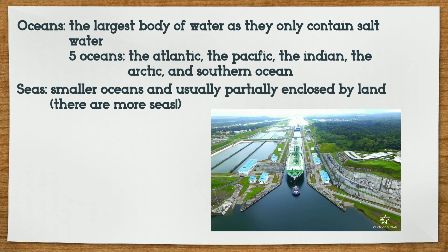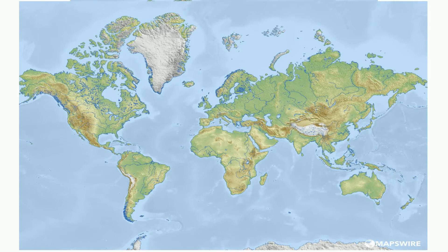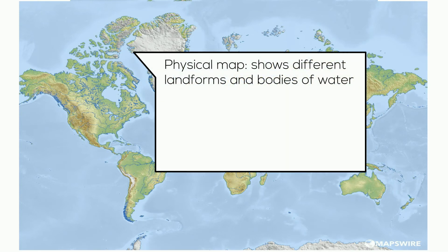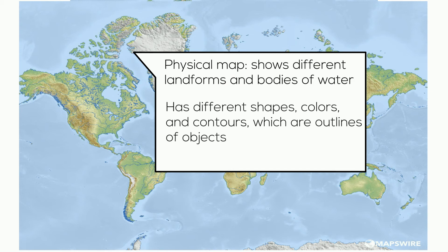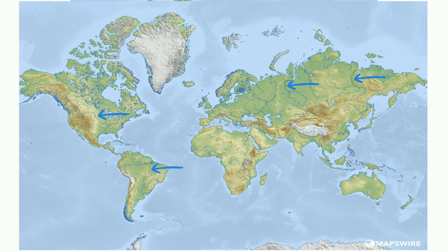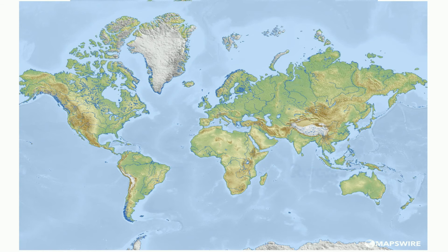Now that we learned about types of lands and waters, let's try to point out some of them on a map. This is called a physical map, which shows different landforms and bodies of water. The map has different shapes, colors, and contours, which are outlines of objects for separating land and water. You can see it's very textured, and it shows pointy little lands. If you look closely, there are thin blue lines that go across lands. Can you guess what those are? They are rivers. The large blue parts represent oceans, and the smaller ones are the seas.